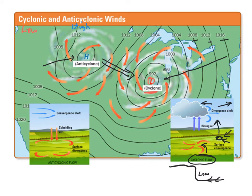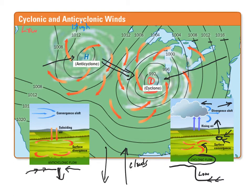In an anticyclonic or high pressure system, air is coming in from up high, converging into the area, which forces a downdraft. Remember, when air lifted up it got cooler and we formed clouds. As air comes down, we see a dissipation of clouds. So normally in a high pressure system we have clear skies, while in a low pressure system we get clouds and rain. High pressure means clear weather; low pressure means cloudy weather.